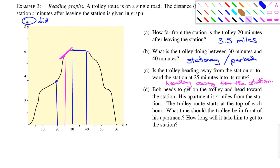And then lastly, part D. Bob needs to get on the trolley and head toward the station. His apartment is four miles from the station. The trolley route starts at the top of the hour. What time should the trolley be in front of his apartment? And how long will it take him to get to the station?